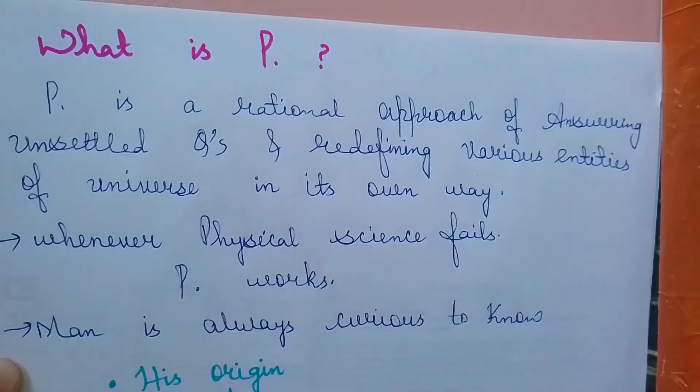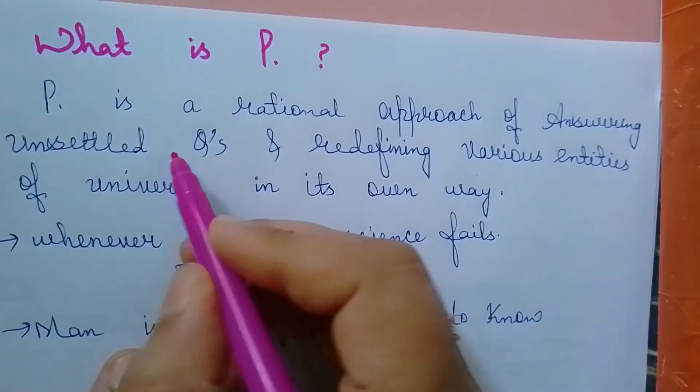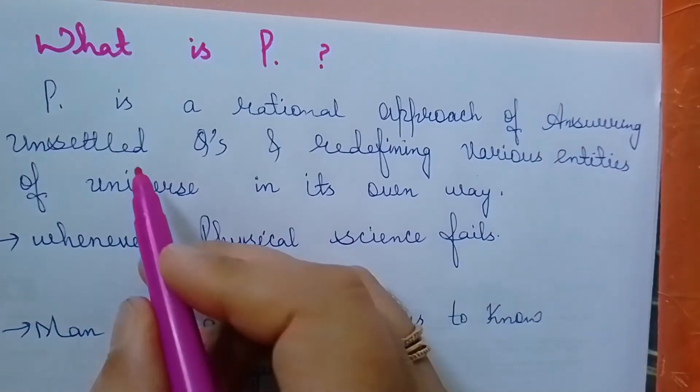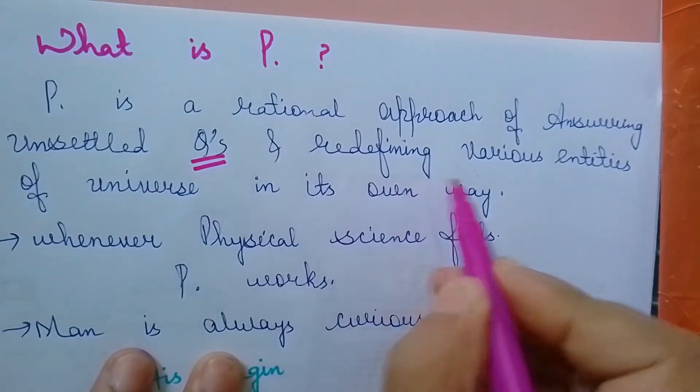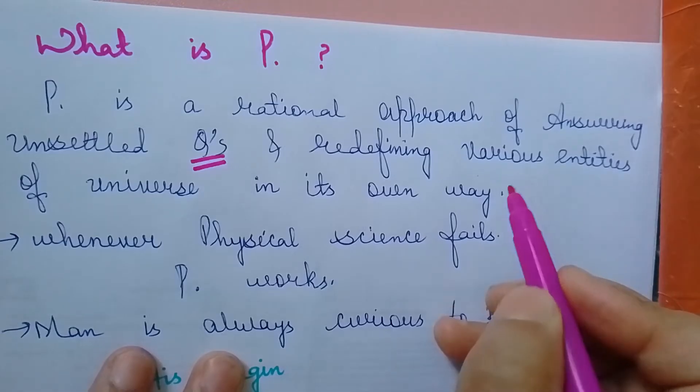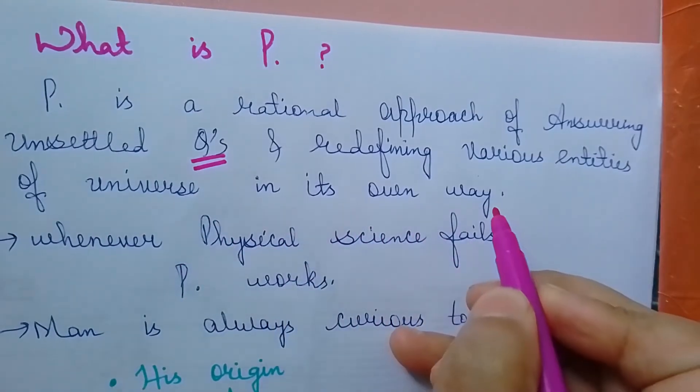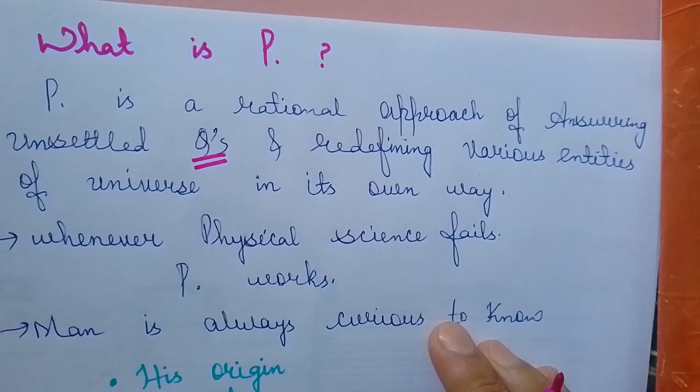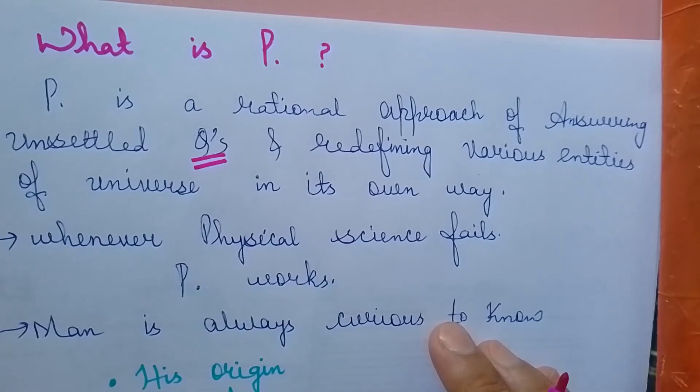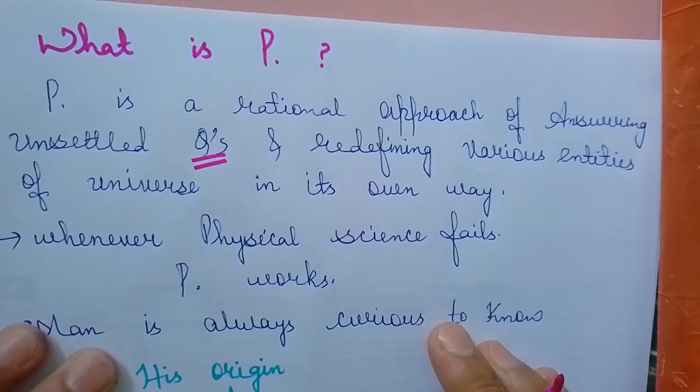What is philosophy? Philosophy is a rational approach of answering unsettled questions and redefining various entities of the universe in its own way. Philosophy always applies logical thought, answers unsettled questions, and redefines things. When a scientist discovers something, philosophy has the desire to explore it again.